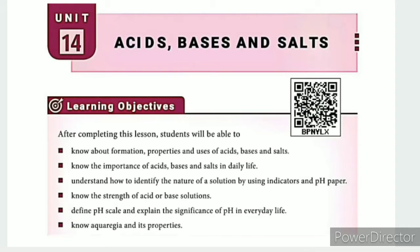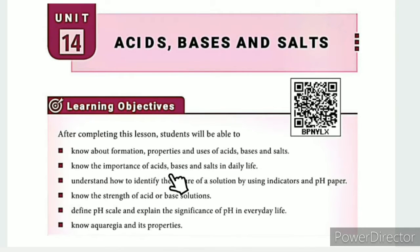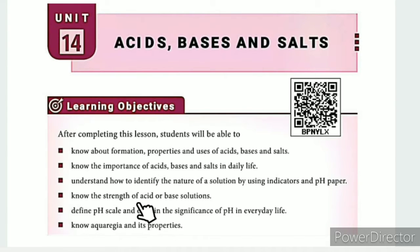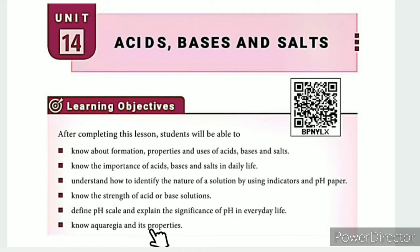Classification of Acids. In this lesson, the learning objectives are: know about the formation, properties and uses of acids, bases and salts; know the importance of acids, bases and salts in daily life; understand how to identify the nature of a solution by using indicators and pH paper; know the strength of acid or base solutions; define the pH scale and explain its significance in everyday life; and know aqua regia and its properties.